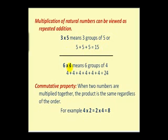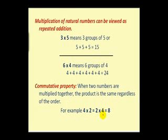Similarly, 6 times 4 means 6 groups of 4, which gives us 24. The second preliminary idea is the commutative property: when two numbers are multiplied together, the product is the same regardless of the order. For example, 4 times 2 equals 2 times 4, which equals 8.